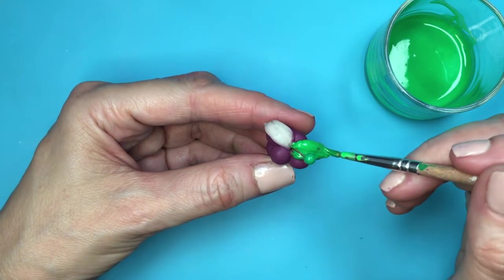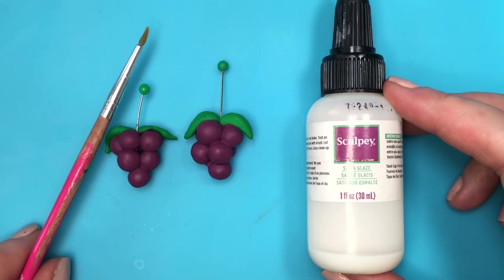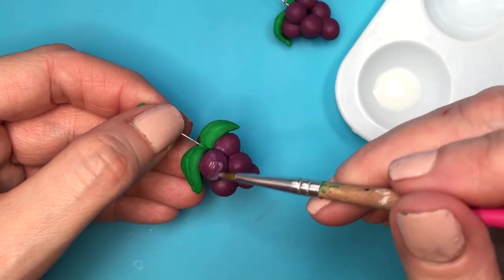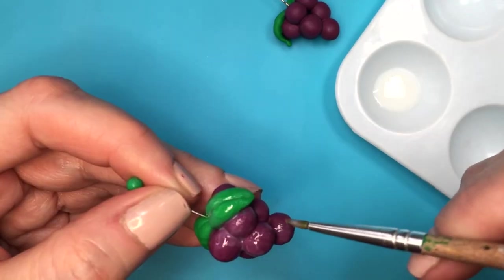Then I'm going to be taking this glazed gloss by Sculpey so they are nice and shiny, and pretty much just covering the whole thing, giving this two coats.